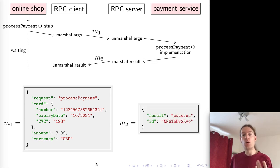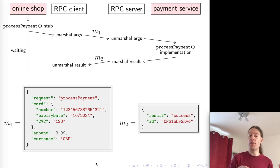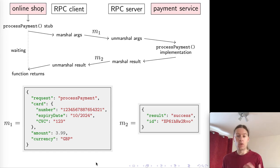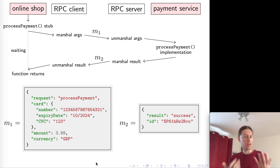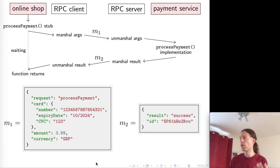The return value of this function again needs to be marshalled — exactly the same process in reverse. The RPC server marshals the return value and sends it back as a message over the network. The RPC client unmarshals it and turns it back into the data types of the programming language you're using. What we've done is to pretend we're calling a function locally, while actually what's happening underneath is communication via messages to another service.